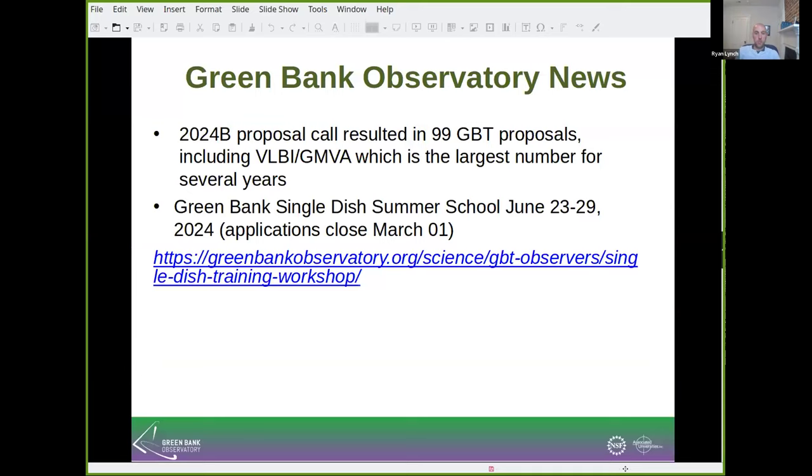As many of you probably know, we just recently had our deadline for our 2024 proposal call in conjunction with NRAO. The deadline was January 31st, it was a really good proposal call. We had 99 GBT proposals. That includes proposals requesting only Green Bank, as well as proposals requesting the GBT as part of the VLBI or GMVA, which is a record basically since the COVID pandemic.